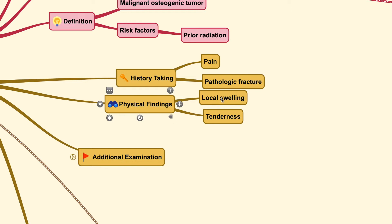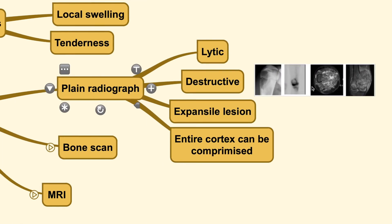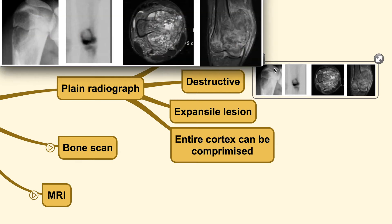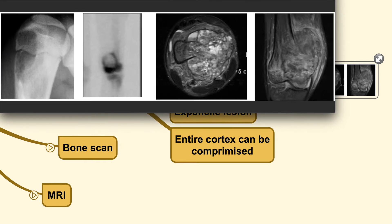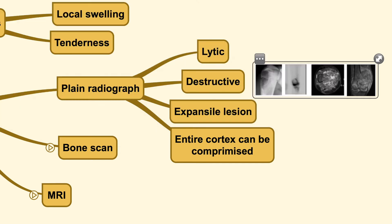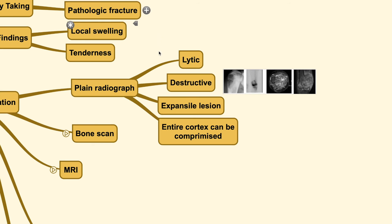Physical findings include local swelling and tenderness. For the plain radiograph, the discovery of the lesion is in a lytic stage. Generally, osteosarcoma lesions are blastic, even though some are mixed with lytic lesions. But in this subtype, you can see a destructive expansile lesion where the entire cortex can be compromised, which is one of the reasons pathologic fracture is more frequent compared to other subtypes.